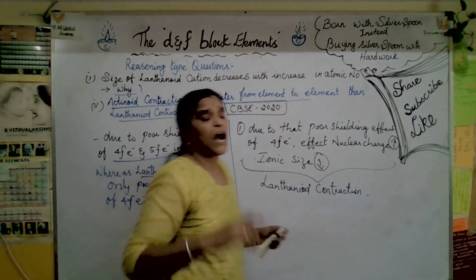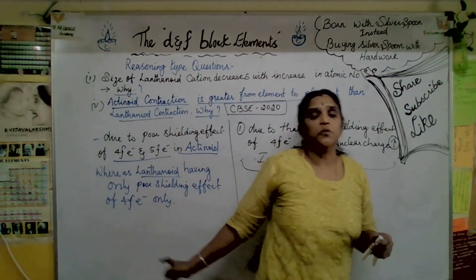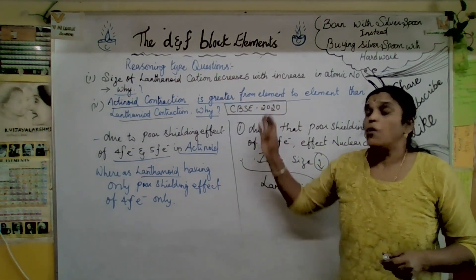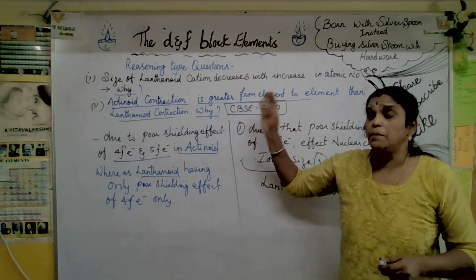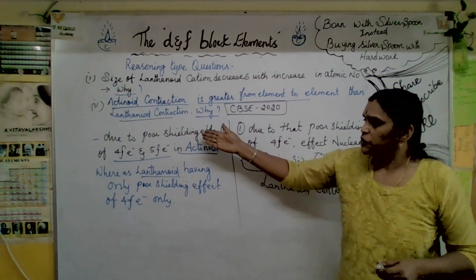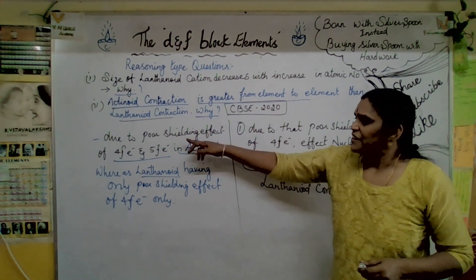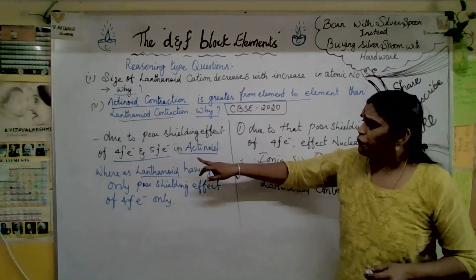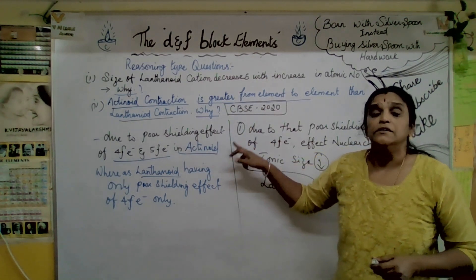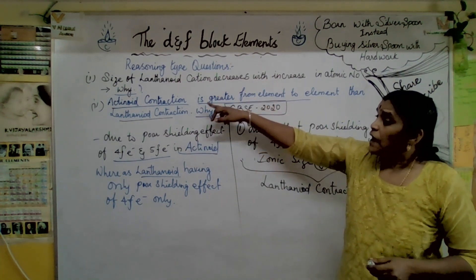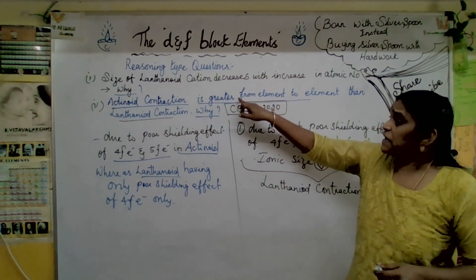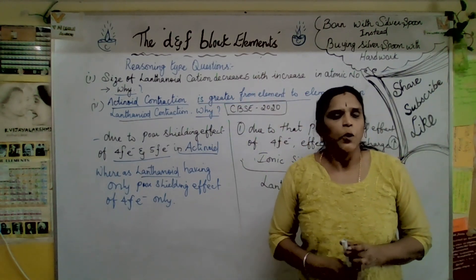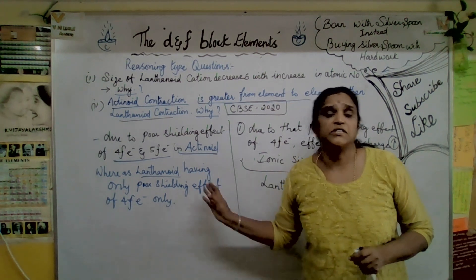Hope you got a better idea about these two questions. What do you mean by actinoid contraction? Due to the poor shielding effect of 4F and 5F electrons in actinoids, the actinoid contraction is greater from element to element than lanthanoid contraction.